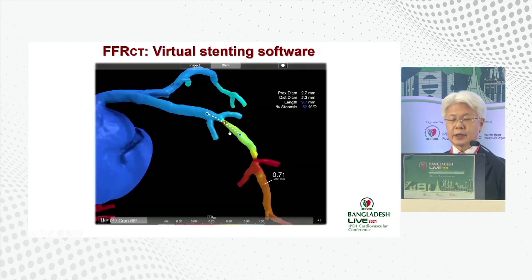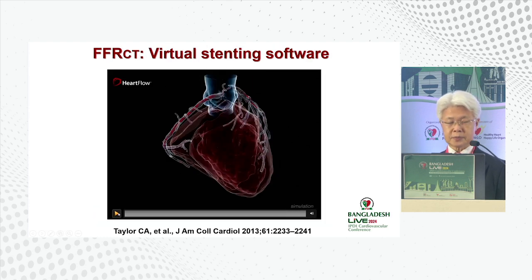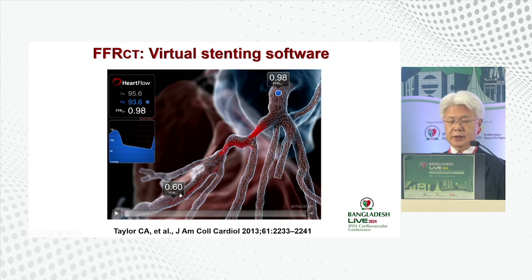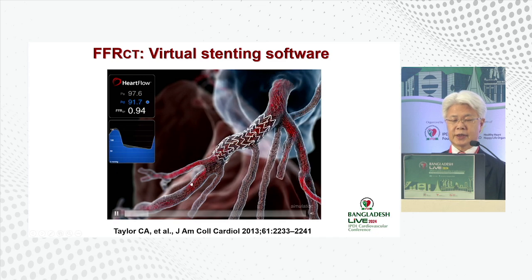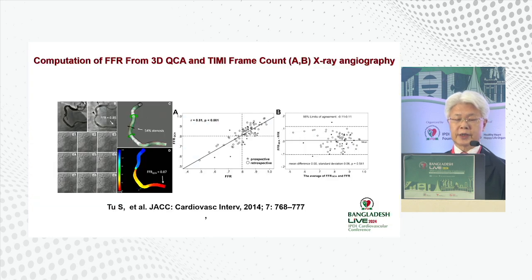CT-FFR and angio-FFR are now available with good correlation to wire-based FFR. Virtual stenting can simulate outcomes: for example, a stent causing percent diameter stenosis to drop from 52% to 10% only improved FFR from 0.71 to 0.74 — not effective. Choosing the correct proximal-site stent position achieved FFR of 0.94, and the pullback demonstrated near-normal values throughout.